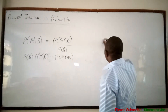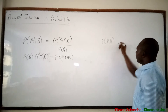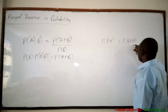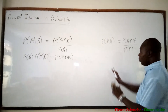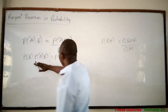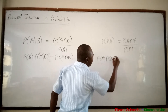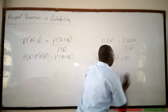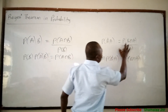Similarly, when you have the conditional probability of B given A, this is equal to the probability of A and B over the probability of A. From here, you can say that probability of A times probability of B given A is equal to probability of B and A.